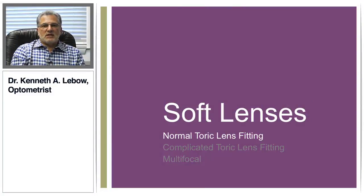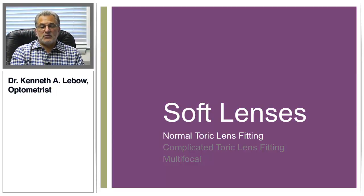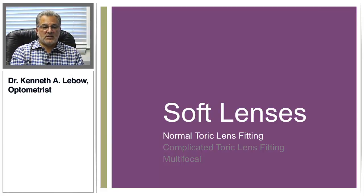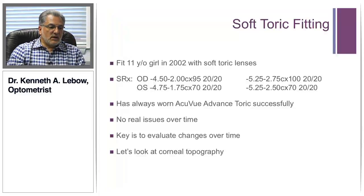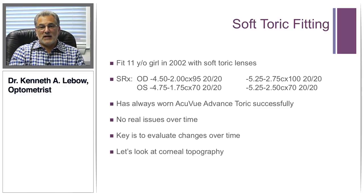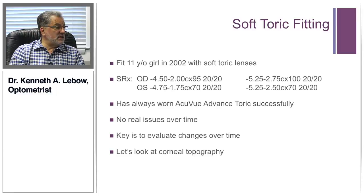Let's apply some of these corneal topography basics and different types of maps to another individual in my practice — talking about soft toric lens fitting and how the corneal topographer has helped. In 2002, this young lady Beth came to see me. She was an 11-year-old girl — I had seen the whole family — and she was moderately nearsighted with some moderate astigmatism.